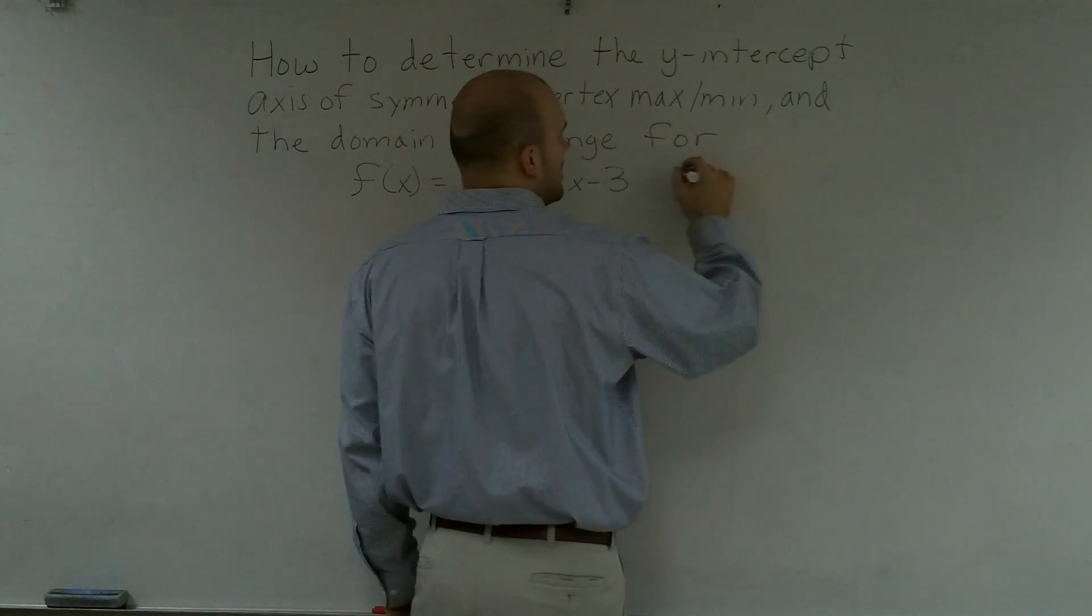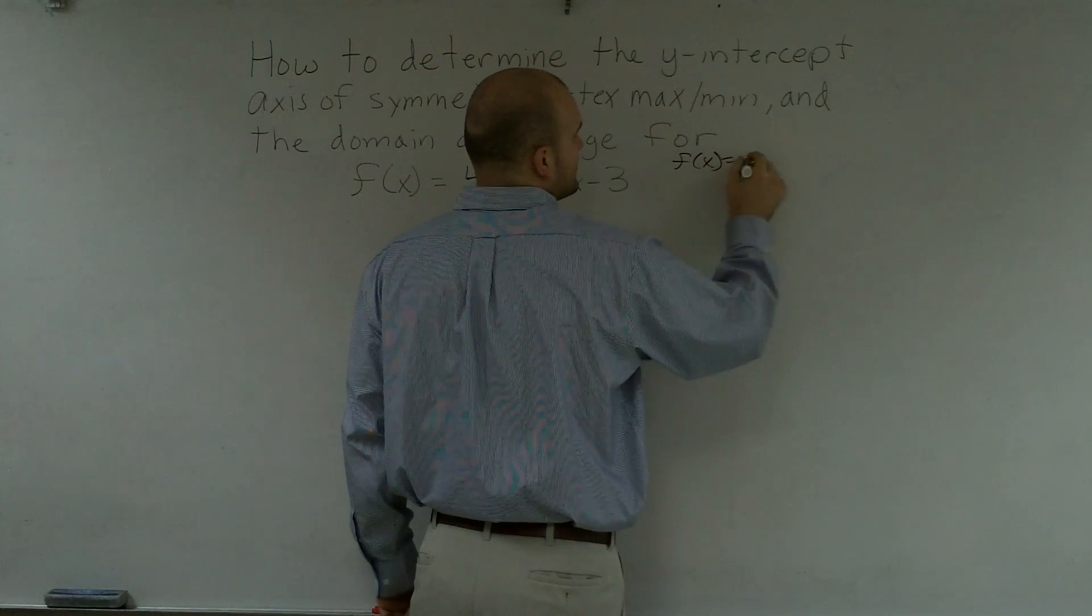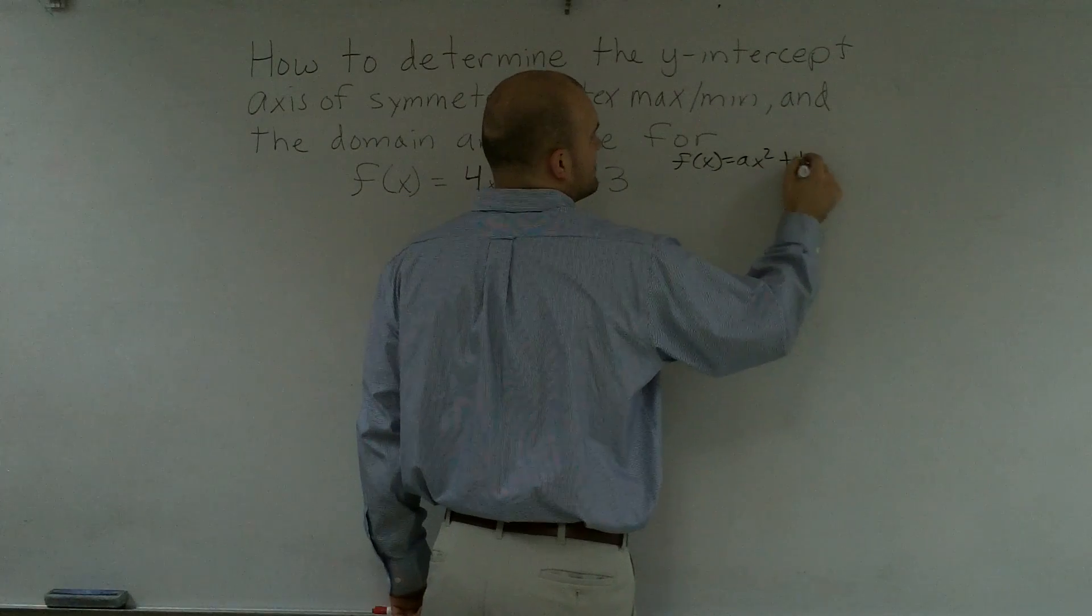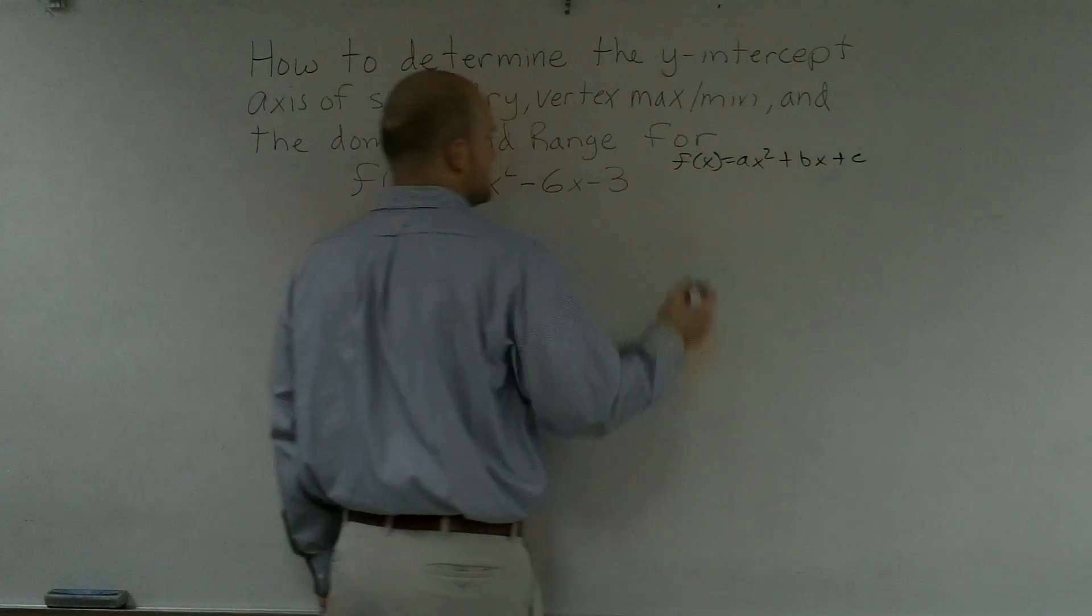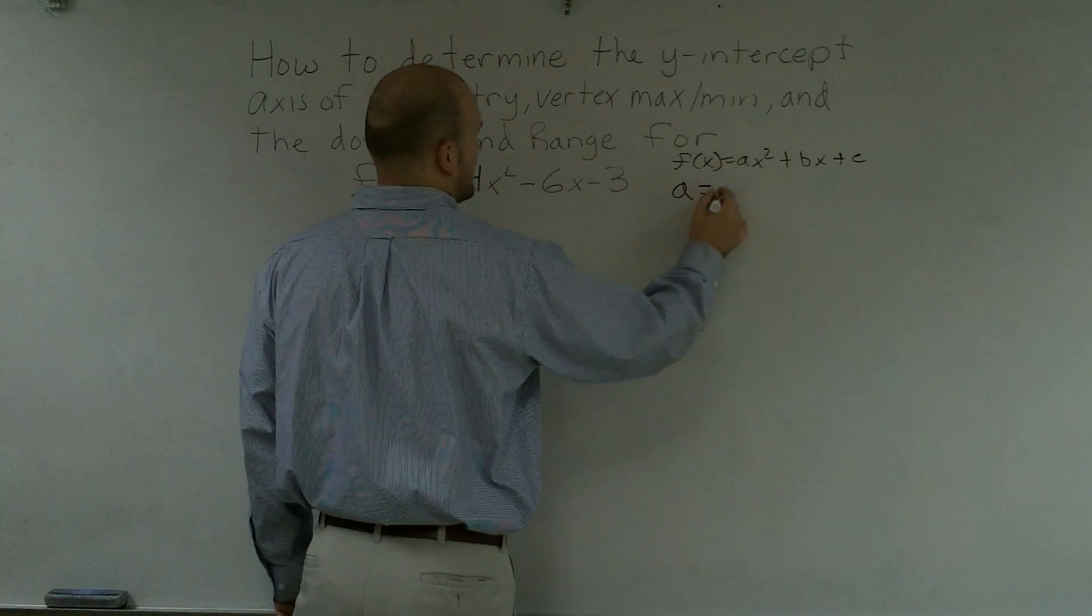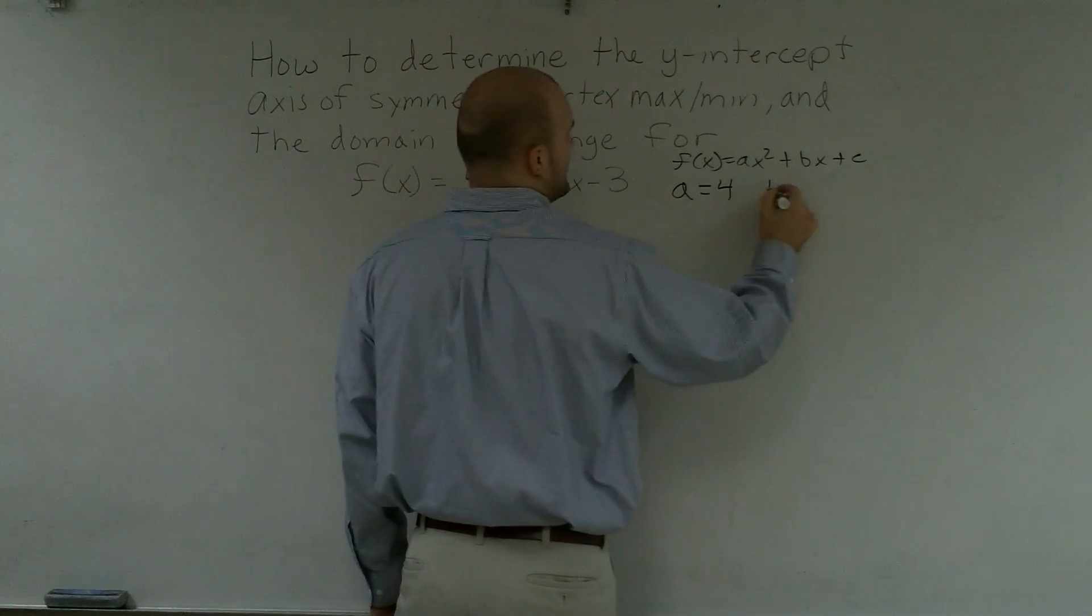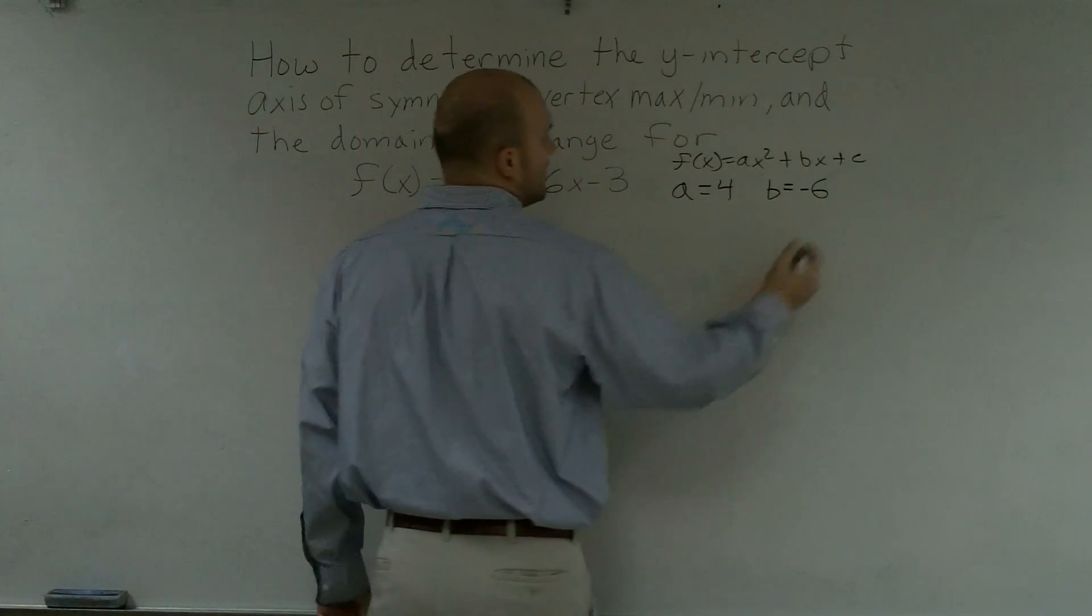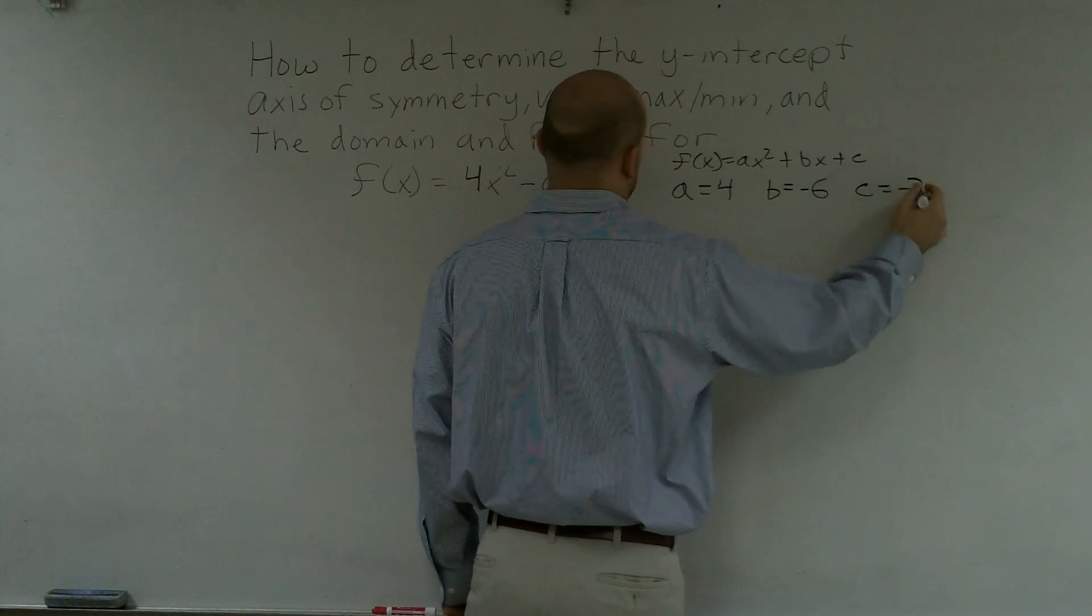I can write this in the form f(x) = ax² + bx + c. So therefore, I know that a is 4, b is -6, and c is -3.